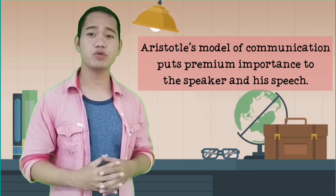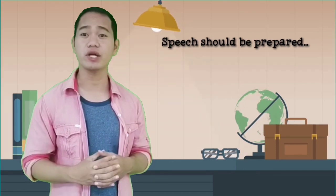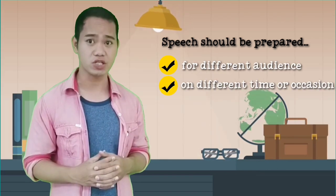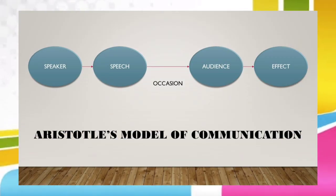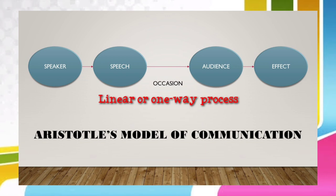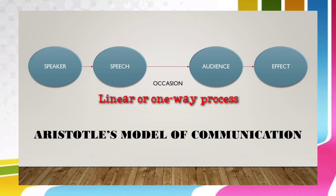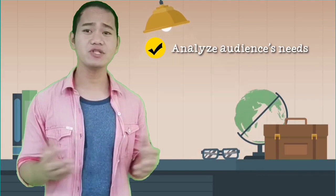This model of communication puts premium importance to the speaker and his speech, which Aristotle says should be prepared and organized for different audience on different time or occasion and for different effects. Aristotle's model is the simplest model of communication. Since it focuses on public speaking, this model illustrates communication as a linear or one-way process, which simply means that a message or speech is simply passed from sender to receiver for an effect or a reason. The speaker plays an important role in public speaking. He or she must analyze his or her audience's needs and consider the setting or the occasion. The speaker's message or speech should be tailored fit to the audience and the occasion.